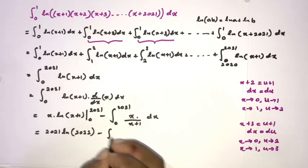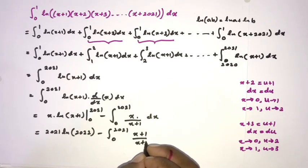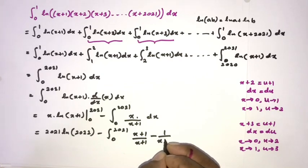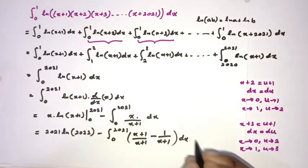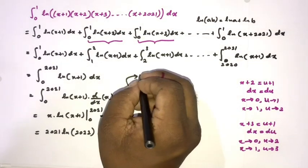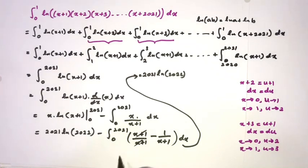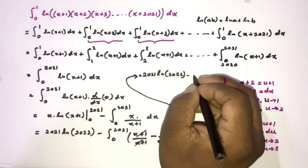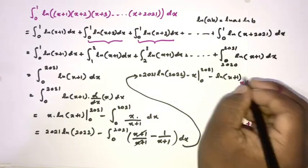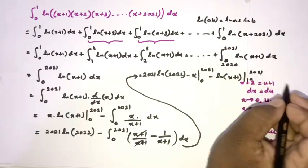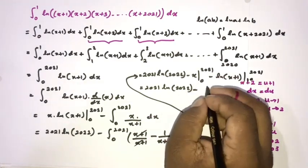Plugging in the upper limit gives 2021·ln(2022). To evaluate the remaining integral, we rearrange the numerator: write x as (x+1) - 1, so x/(x+1) = 1 - 1/(x+1). The '1' terms integrate to x, and 1/(x+1) integrates to ln(x+1), so we get [x - ln(x+1)] from 0 to 2021.